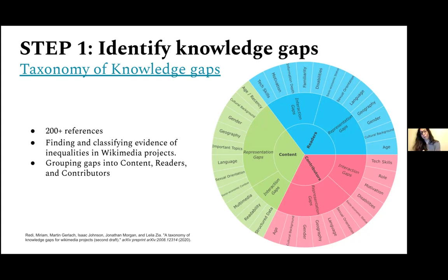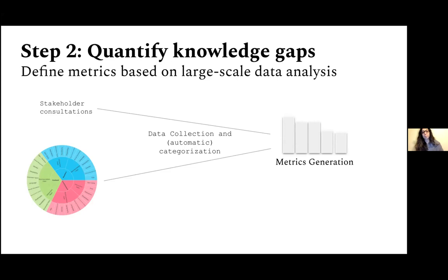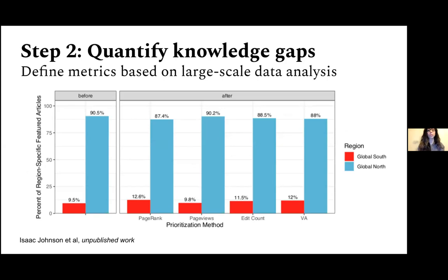So in step one, we identified systematically what the knowledge gaps are in Wikimedia projects. In step two, we want to quantify these gaps — essentially mapping each gap in the taxonomy into a set of numbers that expose the extent to which the gap exists. For example, 80% of biographies are about men — this is a metric to measure the gender gap in content. Behind defining metrics for knowledge gaps, there is a lot of statistics, a lot of data analysis, and in some cases we need to build models and do substantial research.